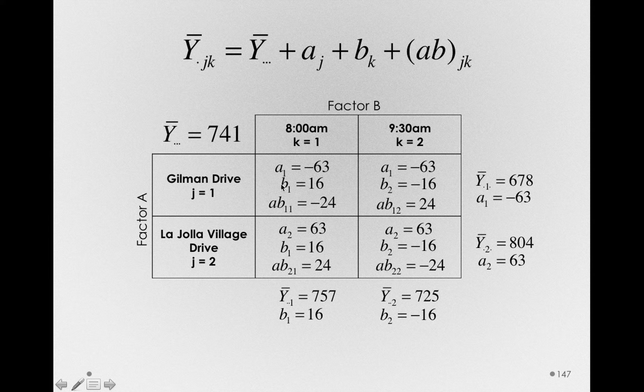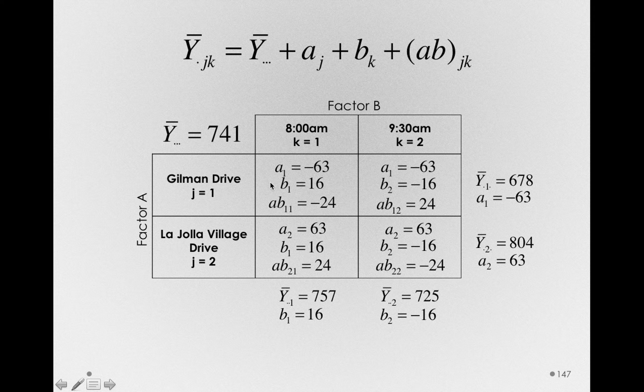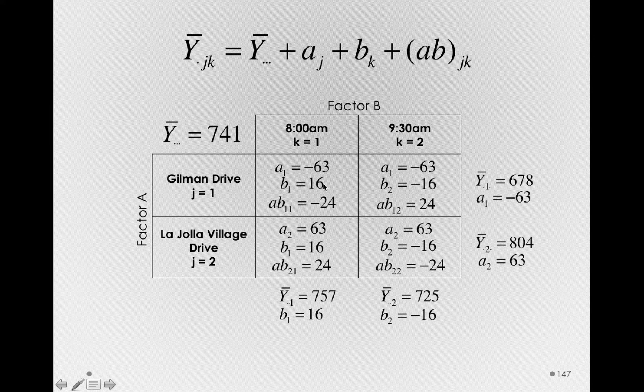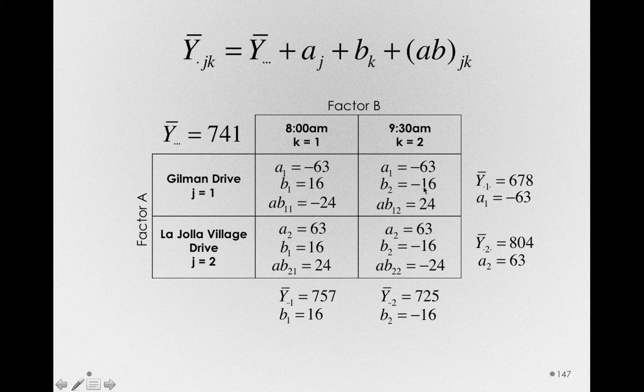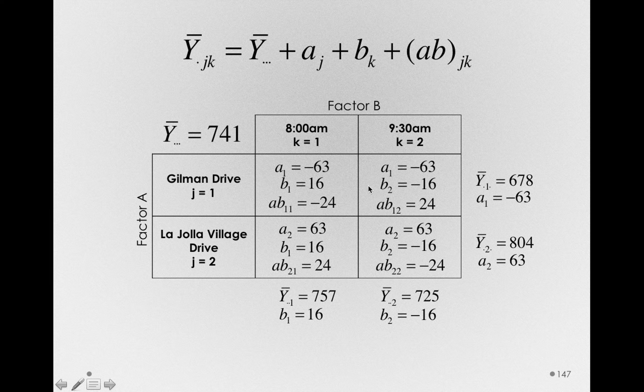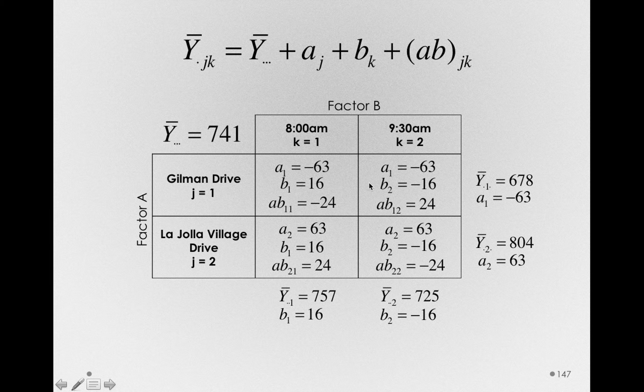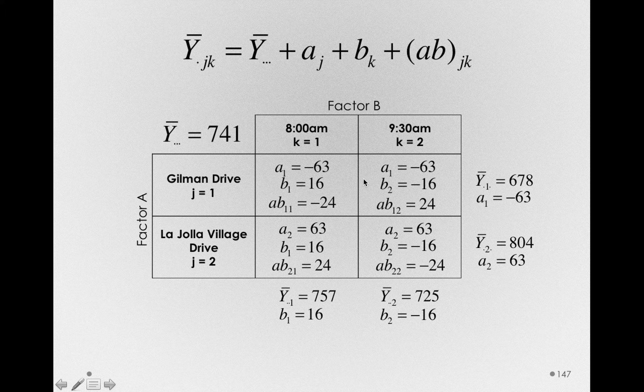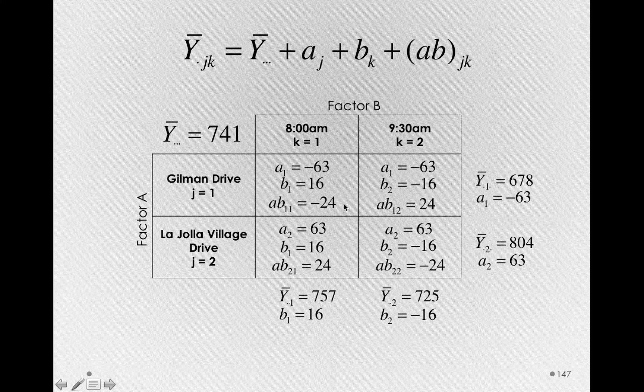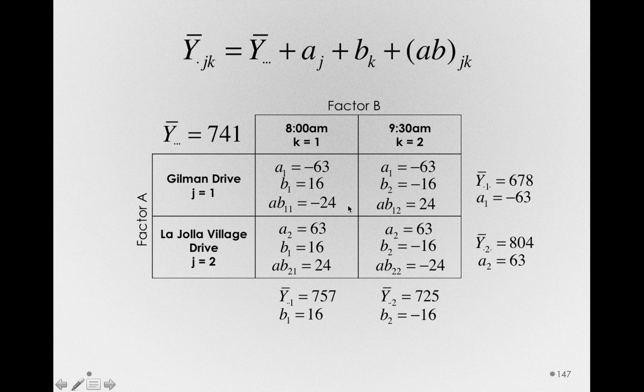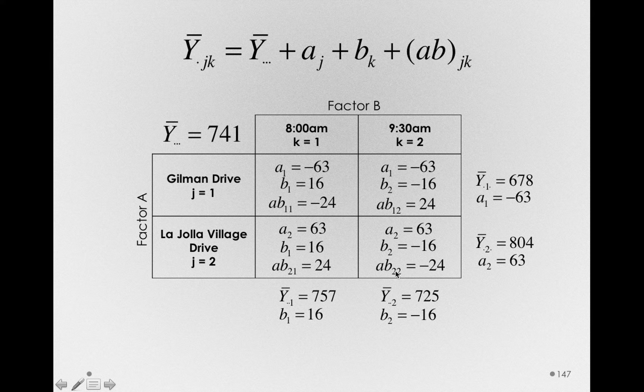We then estimated the B terms, the effect of factor B. And just like the effect of factor A, these B terms were yoked. B1 is as positive as B2 is negative. So one more degree of freedom lost. So we've used up three degrees of freedom so far in estimating those four means, and the final degree of freedom, the final amount of information we need to estimate or define those four means, was used up by the interaction terms.